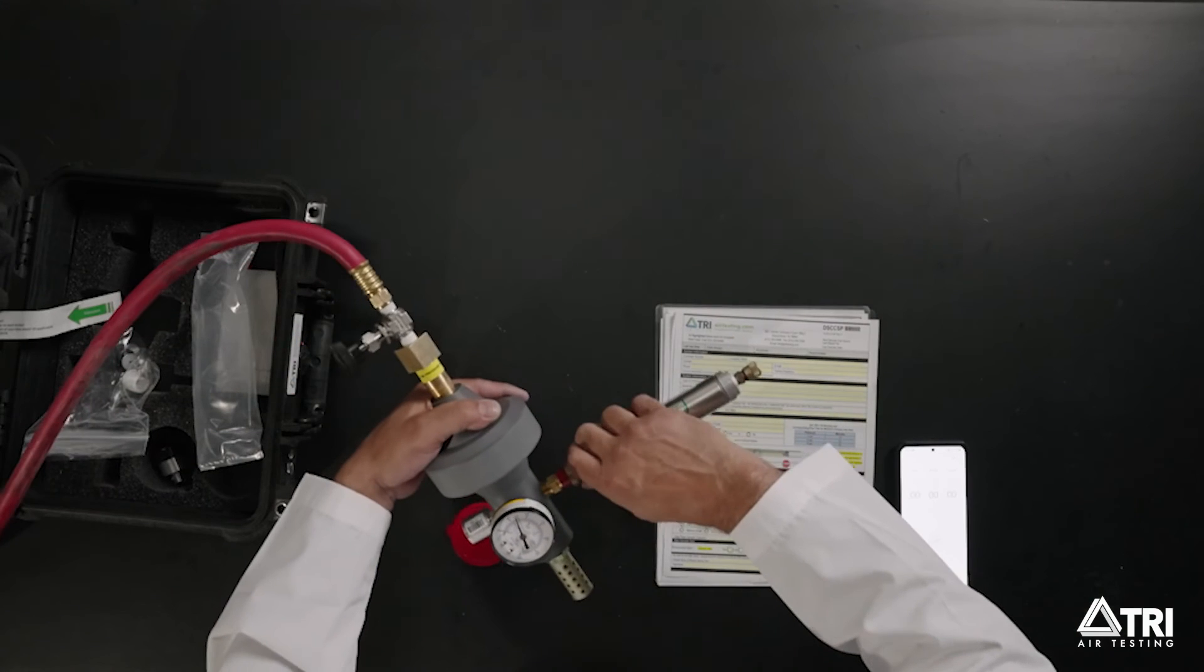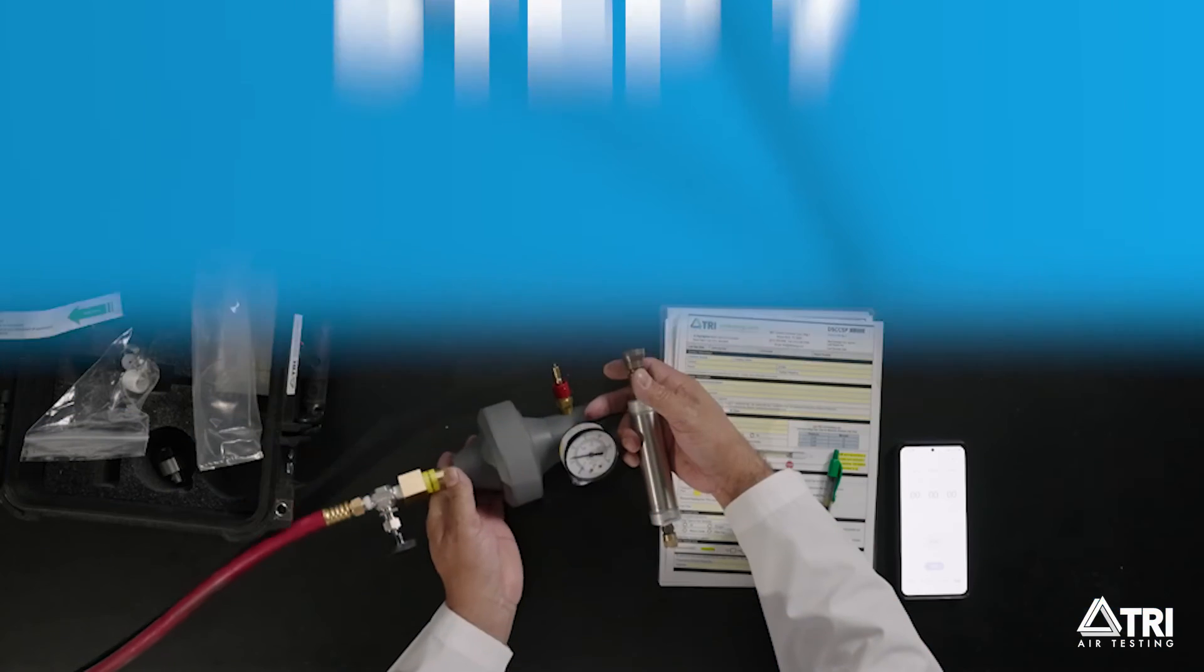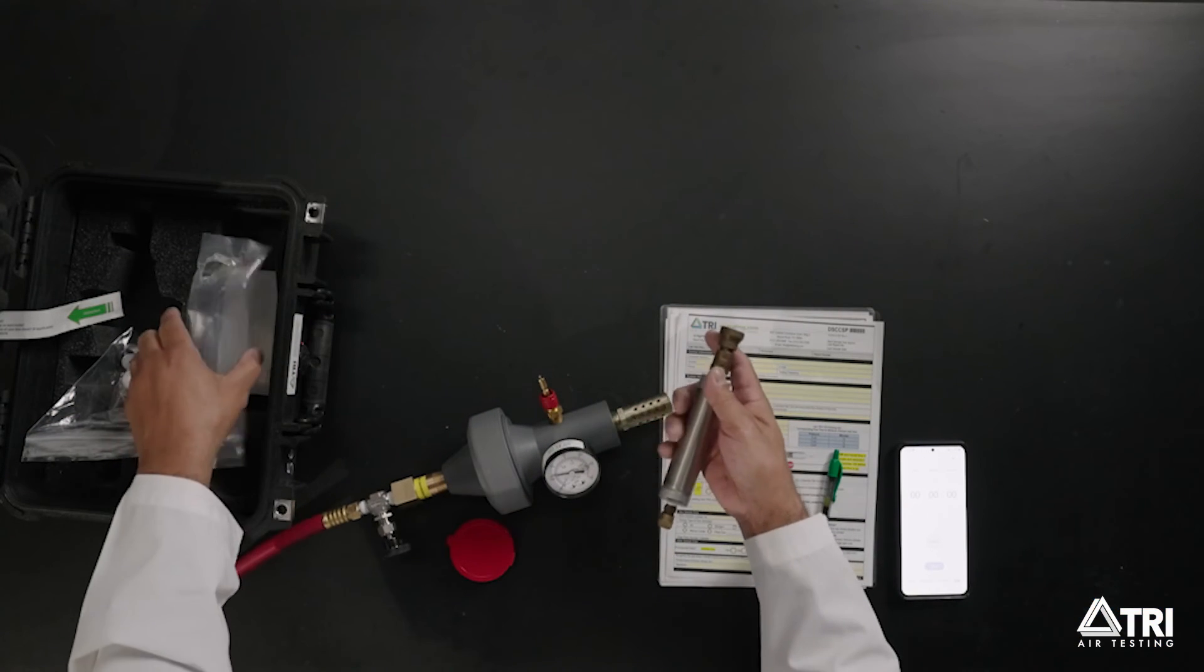While the gas is still flowing from your source, remove the sampling cylinder by pressing down on the quick connect fitting. Allow the filter to run for the remainder of its specified time.